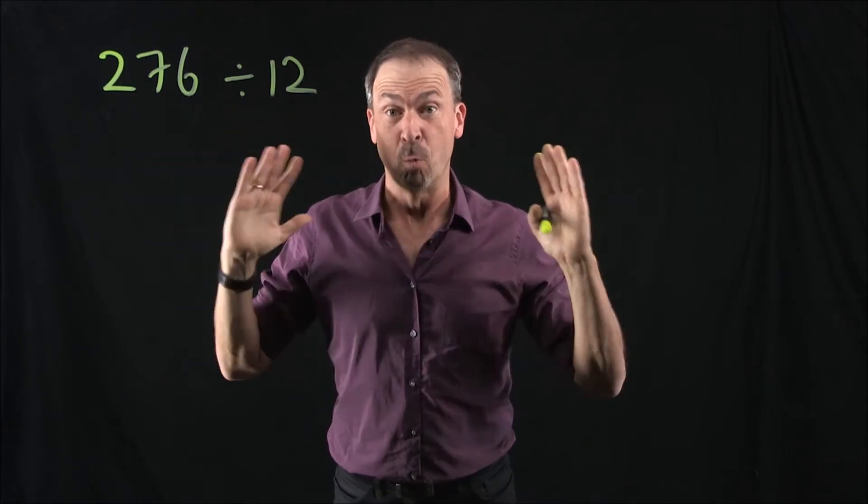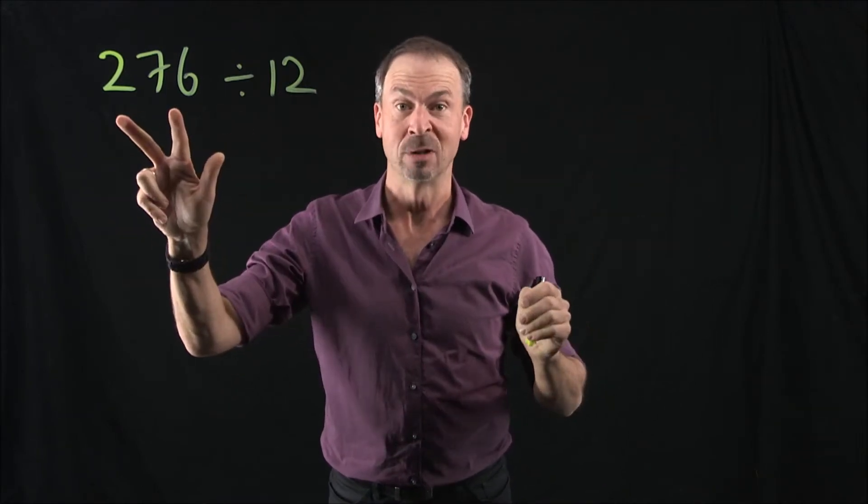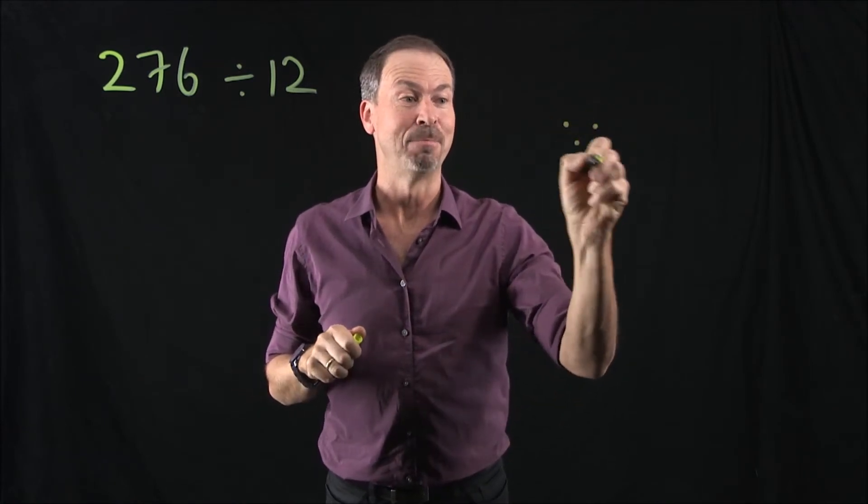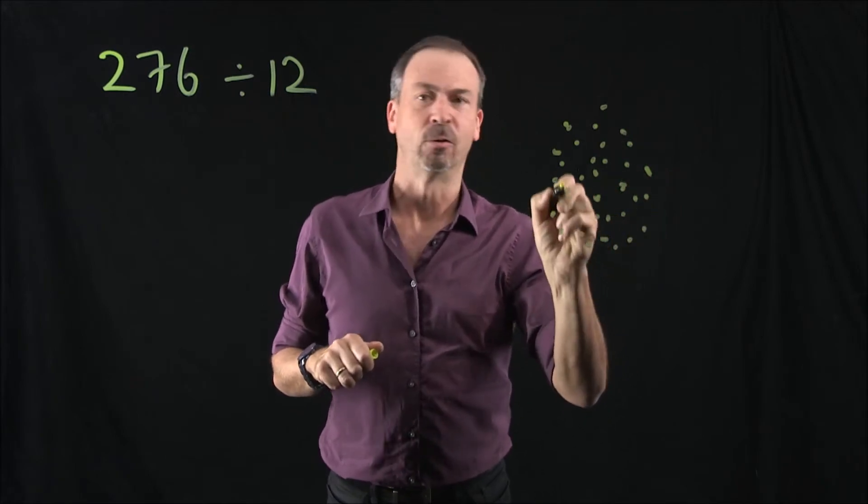Alright, so one way to do this division problem—a very clunky, awkward, horrible way—would be to draw a picture of 276. For example, here's a picture of 276 dots. So let's see. Well, it's not there yet. I'm going to draw lots of dots.